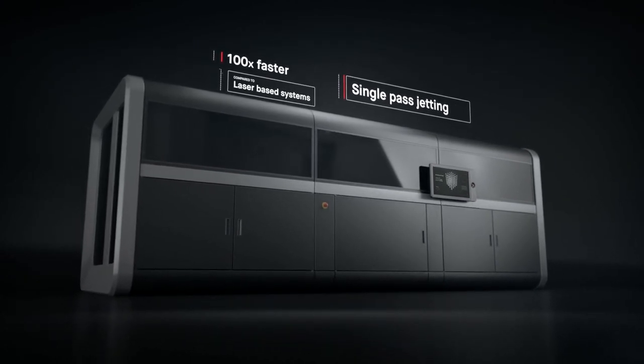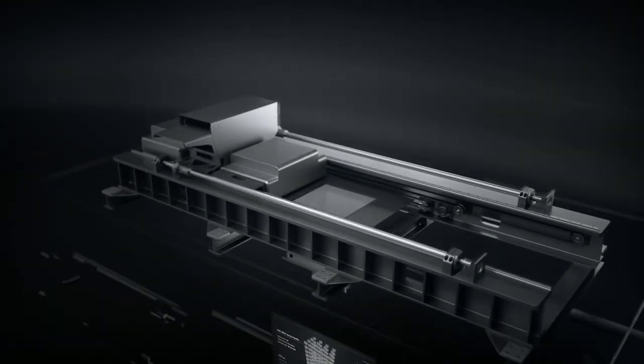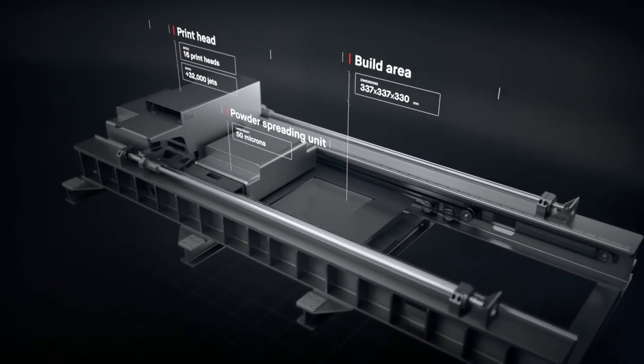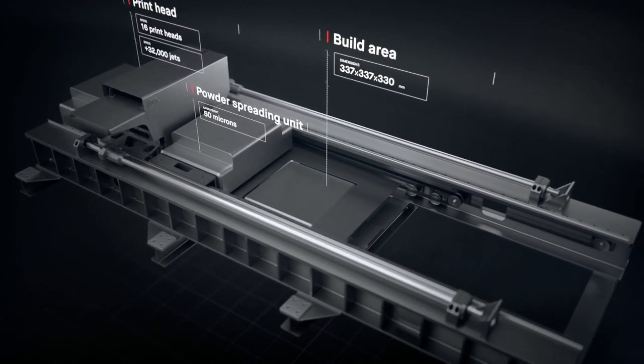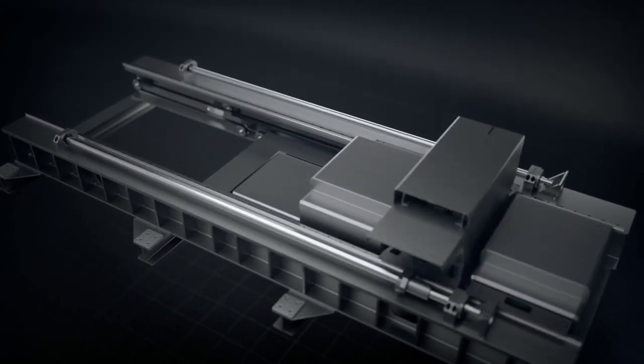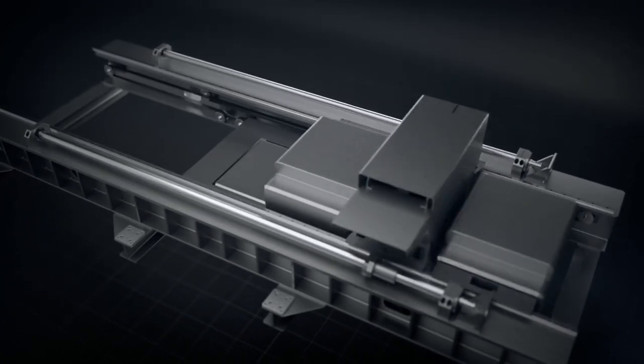It works by combining two powder spreaders and one print unit into a single-pass system to both spread metal powder and print. Unlike existing metal 3D printing, there is no wasted motion with single-pass jetting.